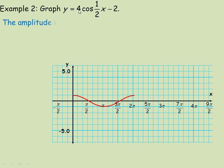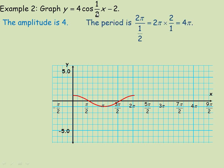For this graph, y equals 4 cos one-half x minus 2, the number 4 is the amplitude — the constant before the cosine. To get the new period, we divide 2 pi by one-half. Two pi divided by one-half is the same as 2 pi multiplied by 2, which is 4 pi. So it has a much longer period than the previous example, and one cycle ends at 4 pi — we're only drawing one cycle on this graph.